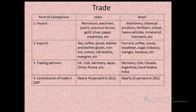India exports tea, coffee, spices, leather and leather goods, iron ore, cotton, silk textiles, mangoes, etc. Brazil exports iron ore, coffee, cocoa, soya bean, sugar, tobacco, oranges, bananas, etc. India's trading partners include UK, USA, Germany, Japan, China and Russia. Brazil's trading partners include Germany, USA, Canada, Argentina, Saudi Arabia and India.